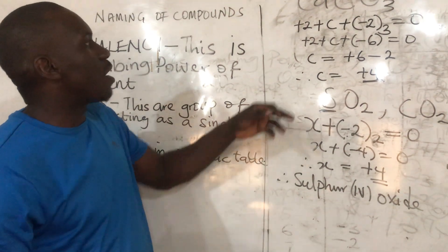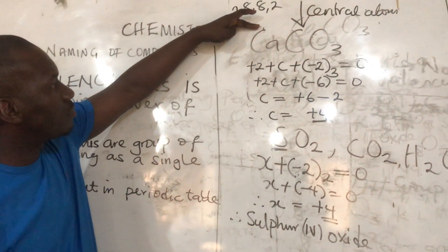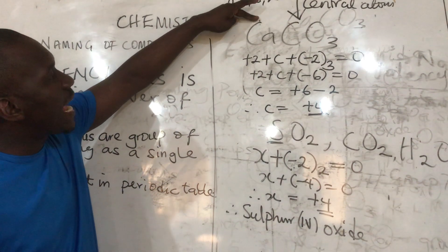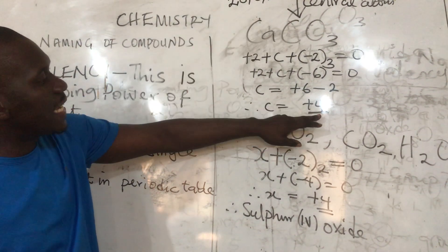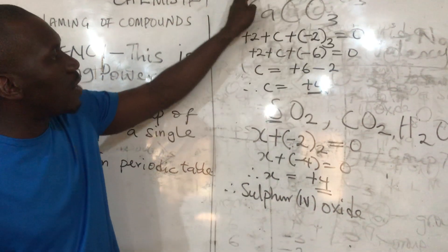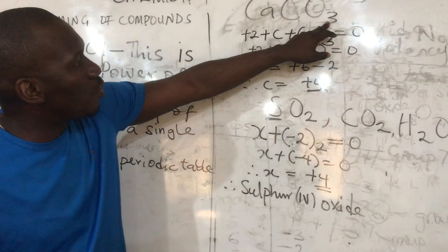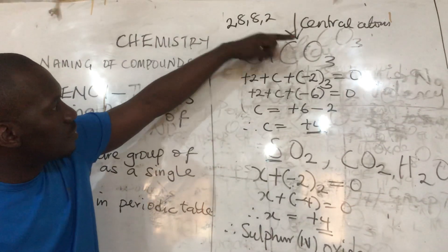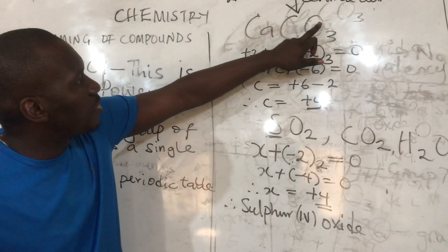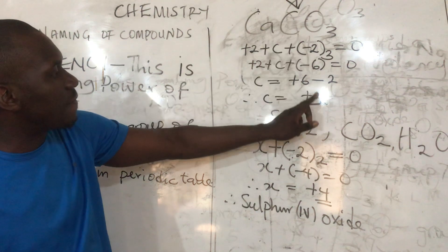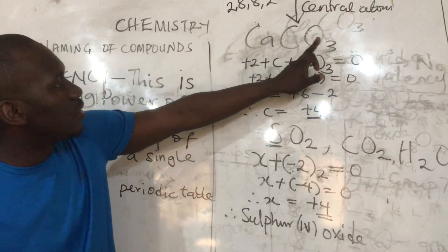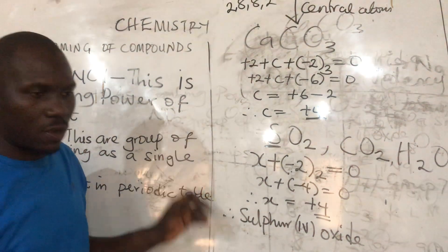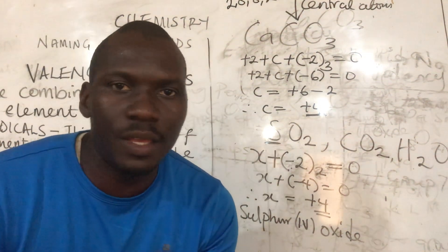Naming this compound, you start with the cation — calcium. There are 3 oxygen atoms, so: calcium trioxocarbonate(IV). That is the name of the compound. You can also try other compounds and send your answers in the comment section.